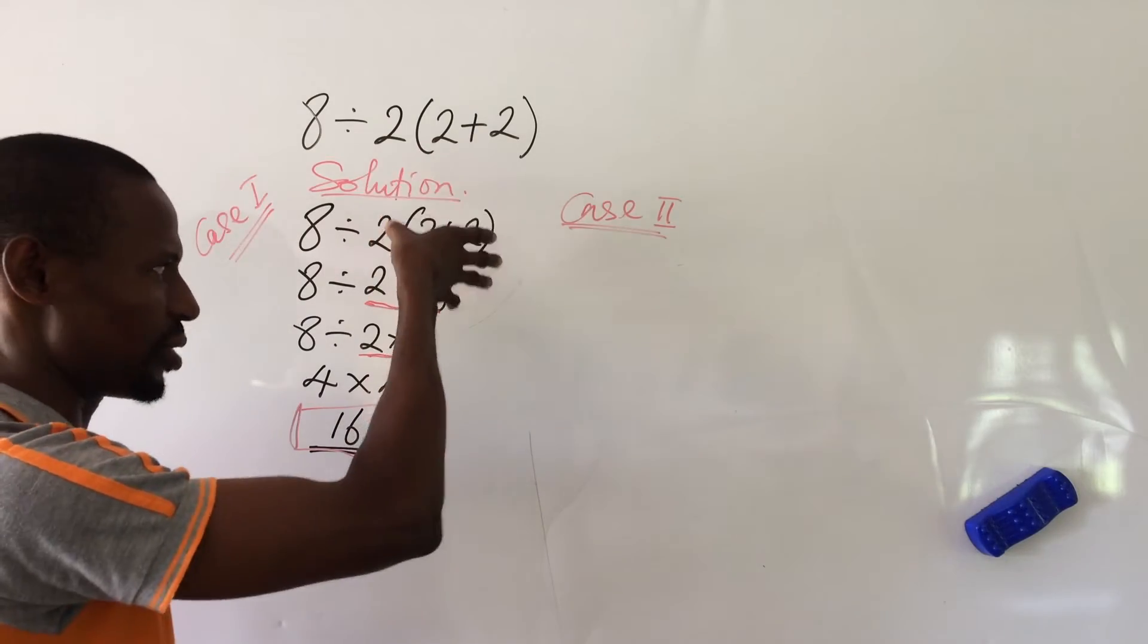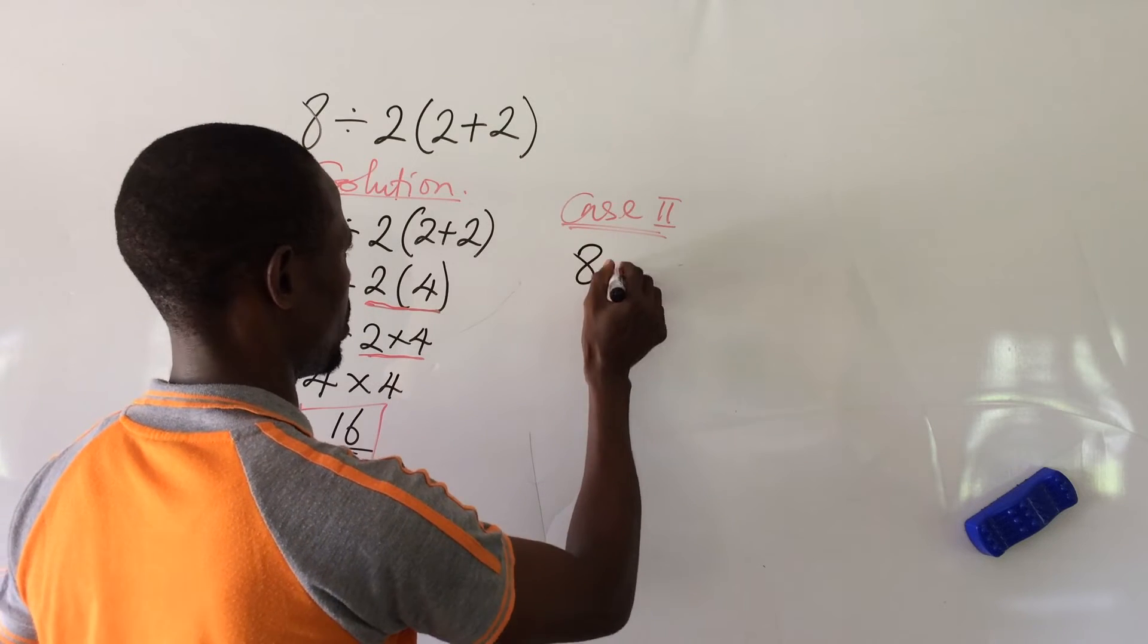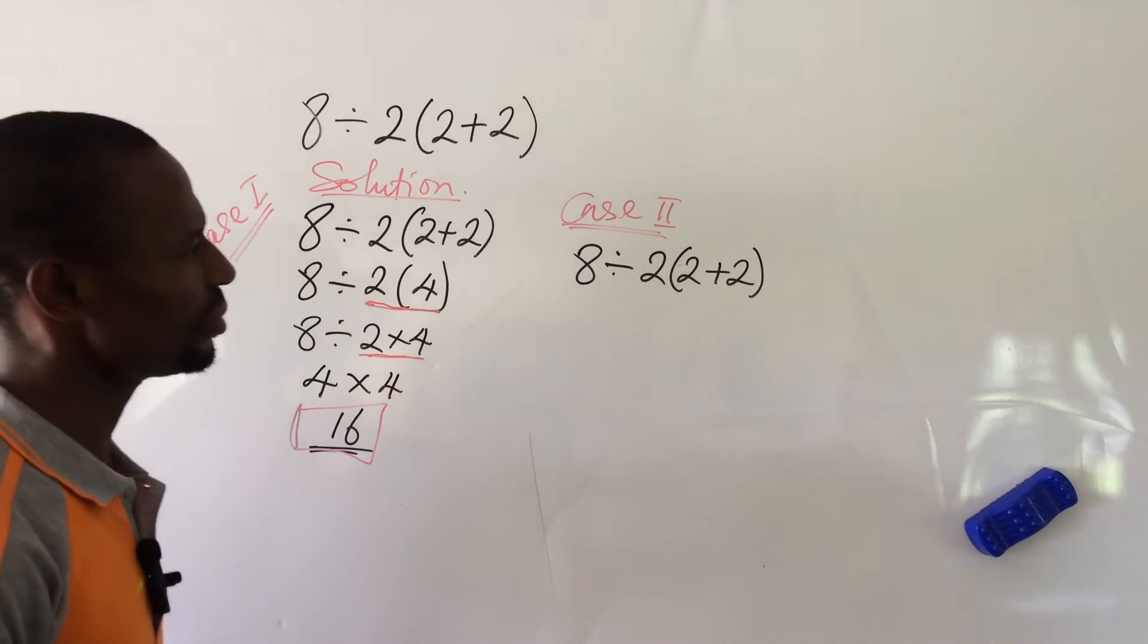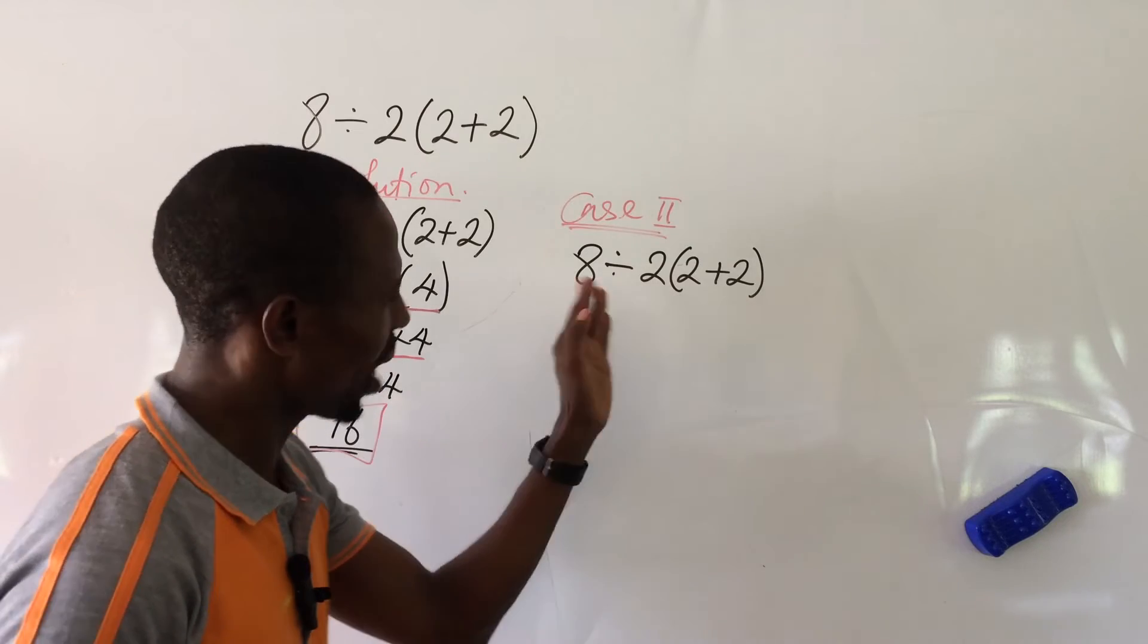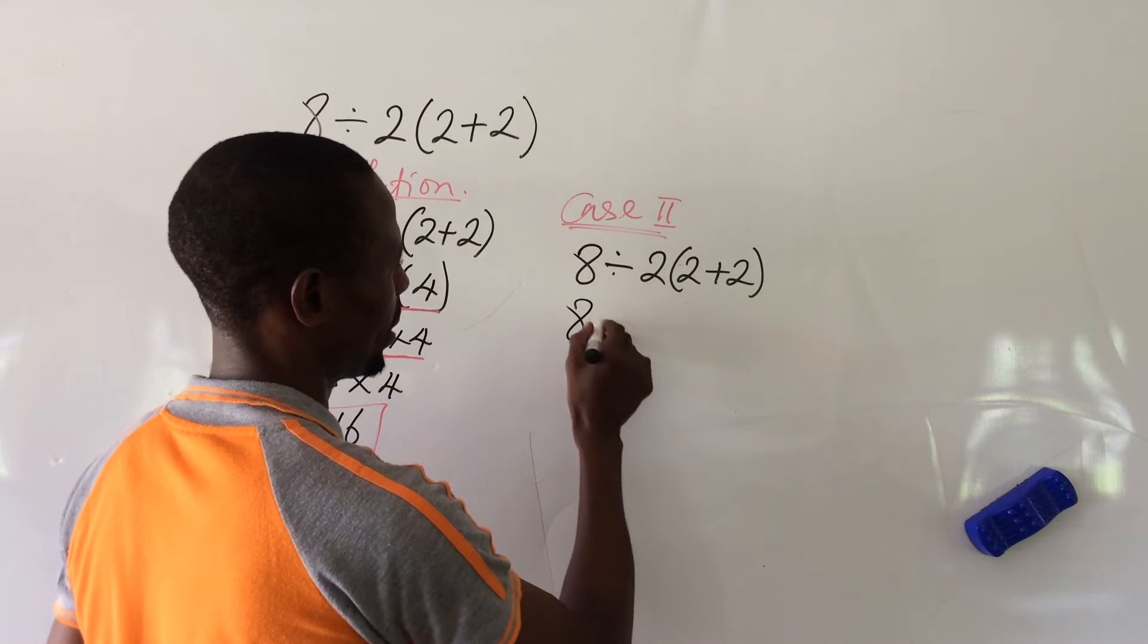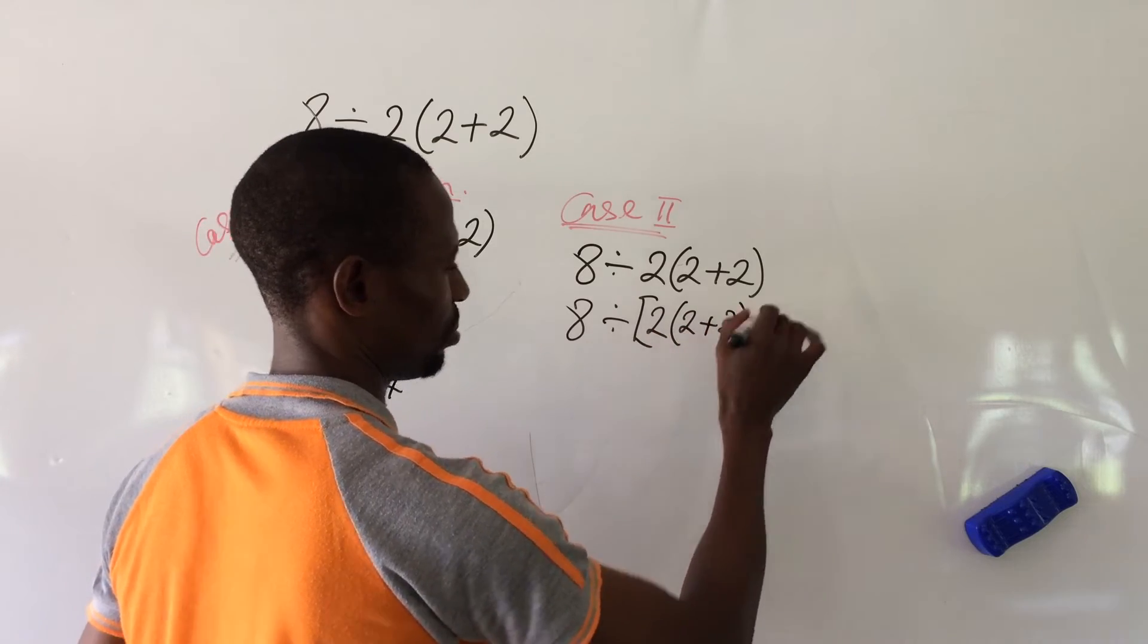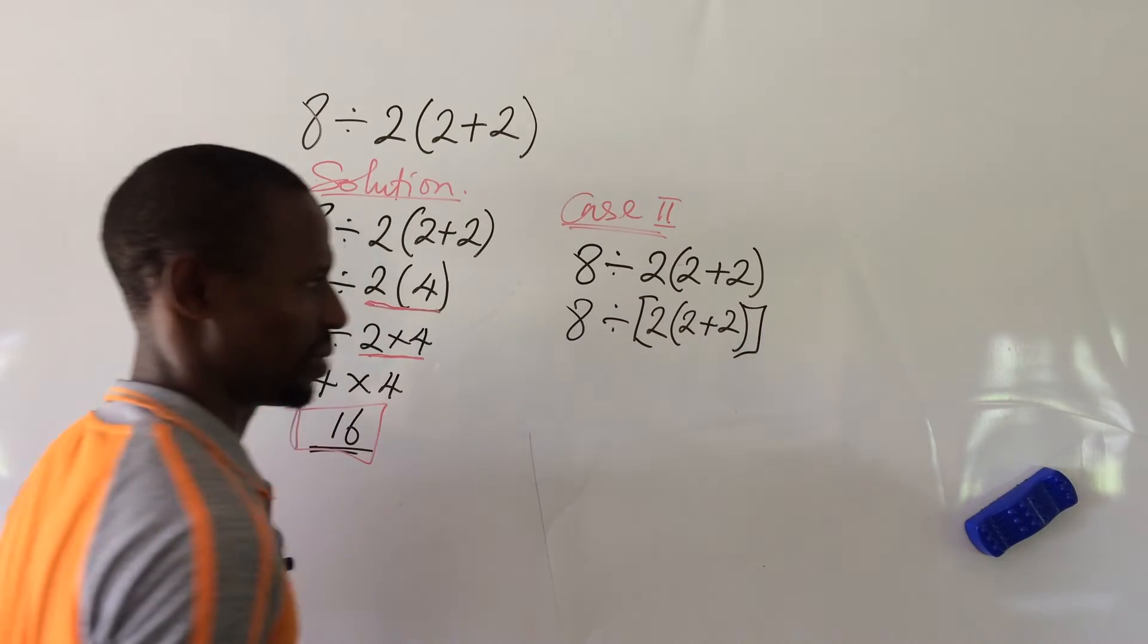Case 2. The other way or the other method of looking at this, assuming this is the question you have in the examination hall, then let's pull down the question which is 8 divided by 2(2+2). Now, this 2 is going into this. So I can rewrite this expression as 8 divided into a square bracket 2 bracket 2 plus 2. Then I close my square bracket.